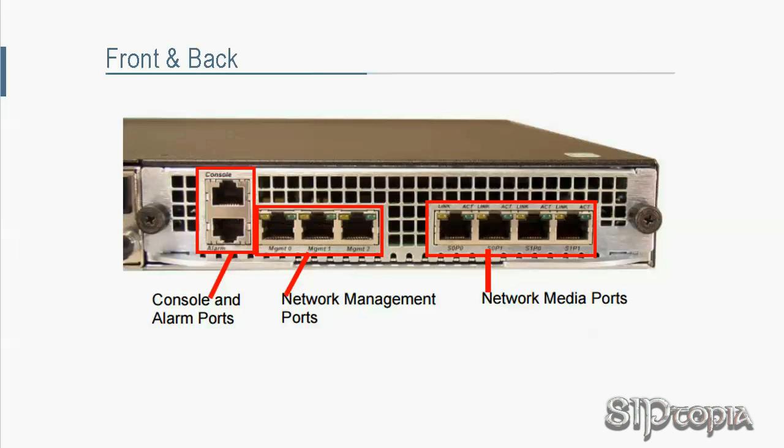The back looks pretty much the same across different SBC models, and the logic is exactly the same no matter how the back of the SBCs look. The console port, as the name implies, is used to console to the SBC — something we need when we first get our hands on one. If you want to use an out-of-band management interface, management0 is your option. Once it has an IP address, you can run a cable to this interface to connect out-of-band. If you have a single box — not a redundant pair — you can skip the management1 and management2 ports. Those are used to connect and synchronize two SBCs in a redundant pair.